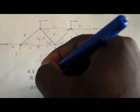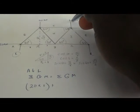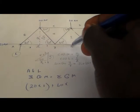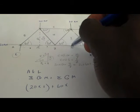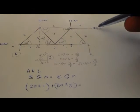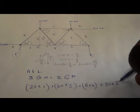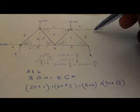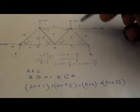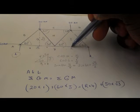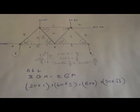The clockwise moment is 20 multiplied by 1, plus 60 multiplied by the distance to L. Remember, this one is 1 and the whole distance of this triangle is 2, so 1 plus 2 gives us 3. That equals the anticlockwise moment: R multiplied by 4, plus 50 multiplied by square root of 3. The distance of this force is square root of 3 because the distance from this point to this side is square root of 3. Now we solve for R.